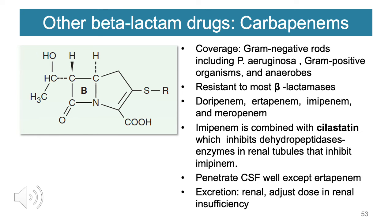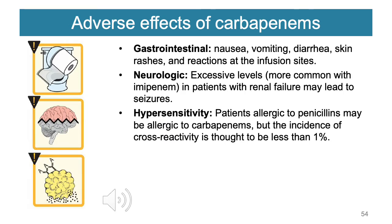Carbapenems cover gram-negative rods including Pseudomonas aeruginosa, gram-positive organisms, and anaerobes. They are resistant to most beta-lactamases. Examples include doripenem, ertapenem, imipenem, and meropenem. Imipenem is combined with cilastatin, which inhibits the hydropeptidase enzyme in renal tubules that would otherwise degrade imipenem. They penetrate CSF well, except ertapenem. Excretion is primarily renal with dose adjustment for renal insufficiency. Adverse effects include GI nausea, vomiting, diarrhea, skin rashes, and injection site reactions. Neurologically, excessive levels — more commonly with imipenem in patients with renal failure — may lead to seizures. Patients allergic to penicillins may be allergic to carbapenems, but the incidence of cross-reactivity is less than 1%.